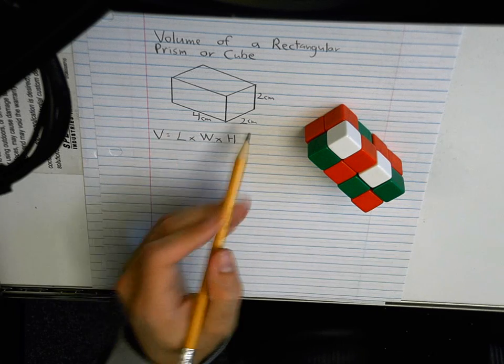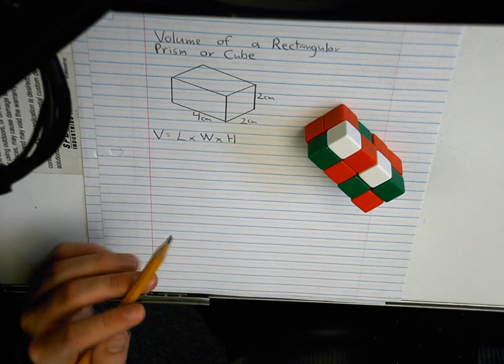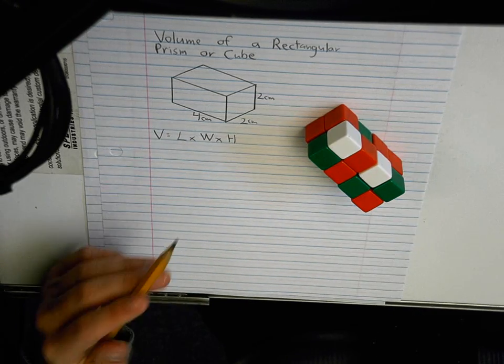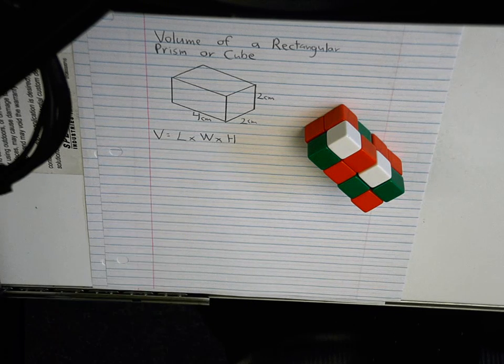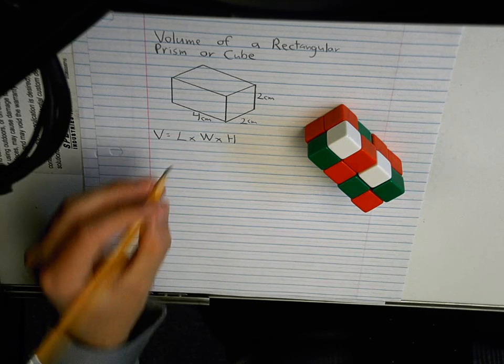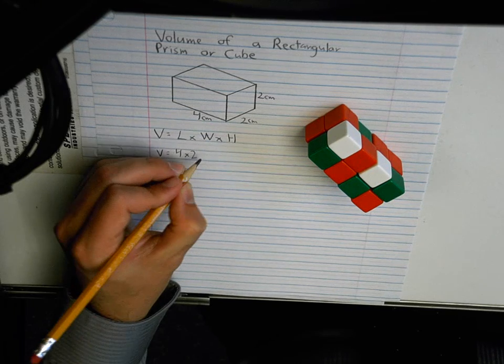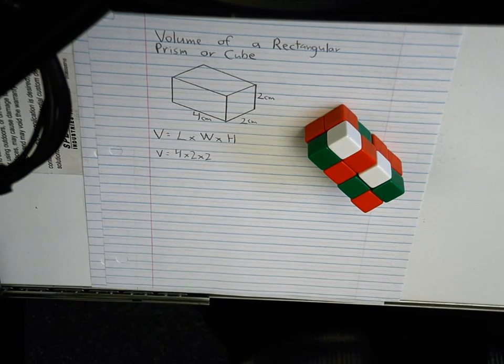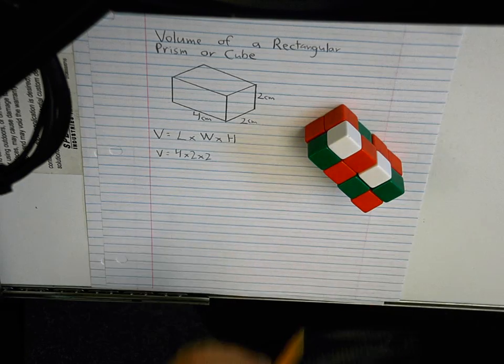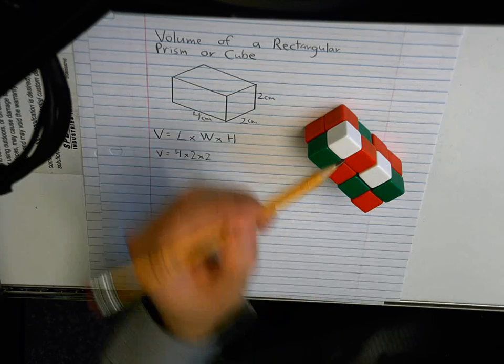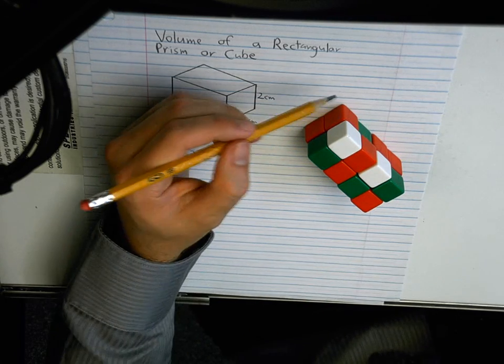Now, in this rectangular prism, what is our length, our width, and our height? Who can tell me? Four times two. Yep. Four times two times two. And do you see how here I have four, two, and two?